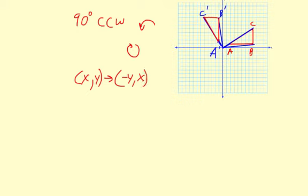comma, x. So that means you switch the x and the y values and then change the sign of the new x value or the old y value, depending on the way you want to look at it.